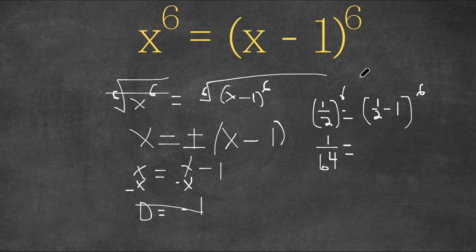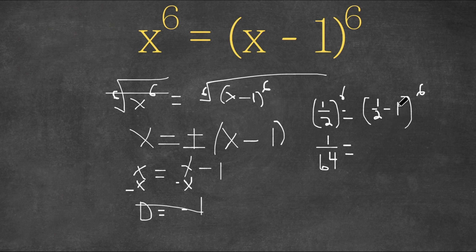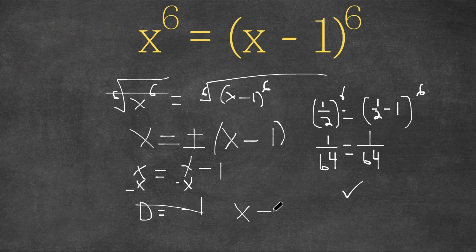On the right side, 1/2 minus 1 is negative 1/2, and negative 1/2 to the power of 6 is the same as (1/2)^6, because when the exponent is even, squaring a positive or negative number always gives a positive result. So negative 1/2 to the sixth power is also 1/64. Both sides equal 1/64, confirming x equals 1/2 is correct.